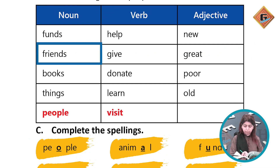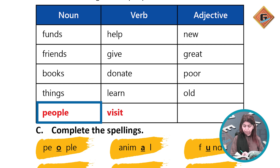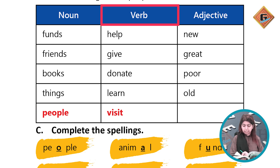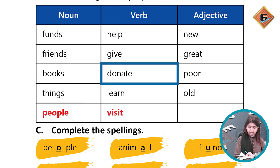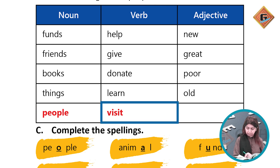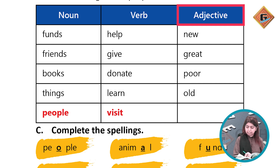The words to categorize include: friends, books, things, people — these are nouns. Help, give, donate, learn, visit — these are verbs.